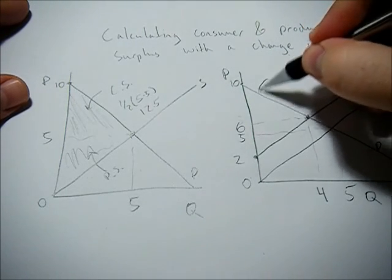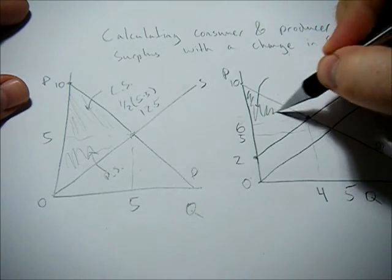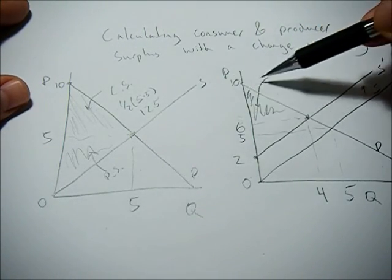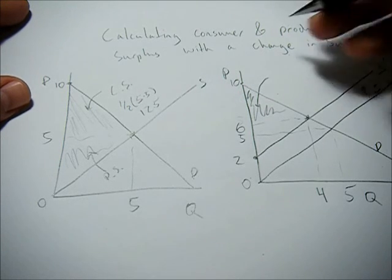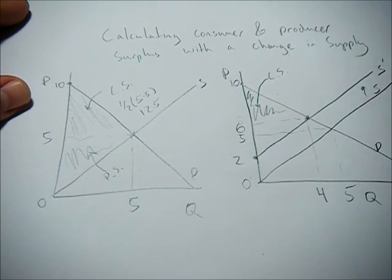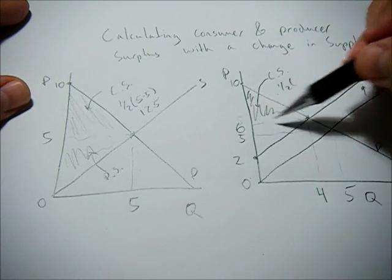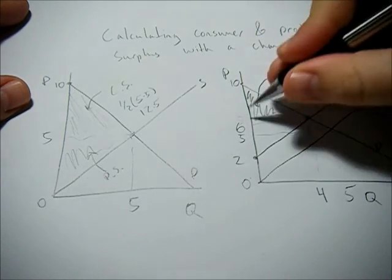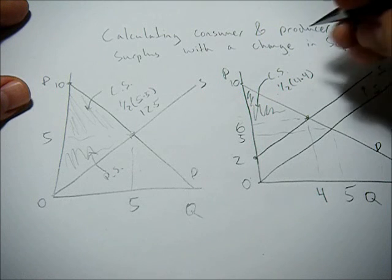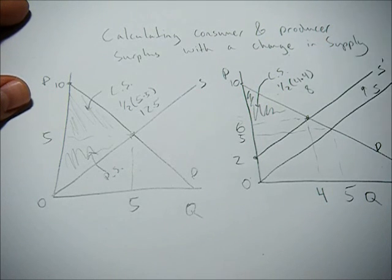So our consumer surplus is that same area, well not the same area, but below the demand curve and above the price. Consumer surplus is going to be one-half base, 4, times height, 4. So that's 16 times a half, or 8.